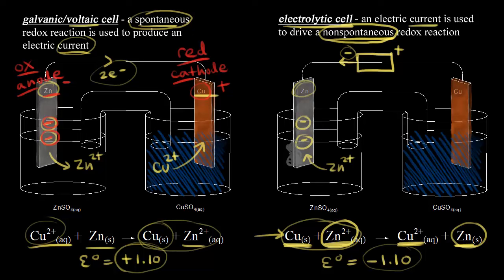Zinc two-plus gaining two electrons to form solid zinc is reduction — gain of electrons is reduction. So this time, reduction is occurring at our zinc electrode, making it the cathode. Red cat. The zinc electrode has had electrons forced onto it by the battery, making this our negative electrode.